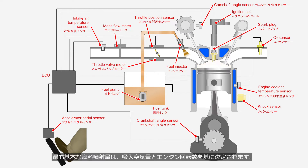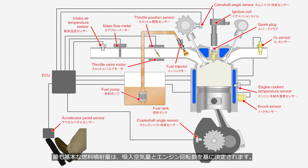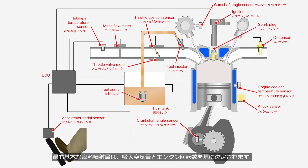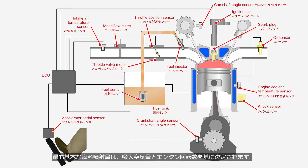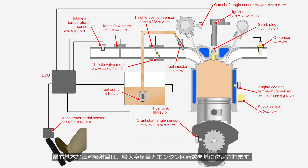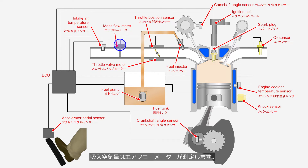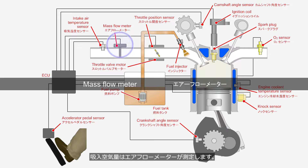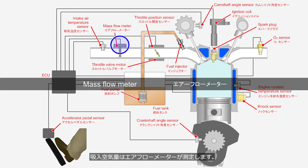The most basic fuel injection quantity is determined based on the intake air volume and engine rotation speed. The air intake volume is measured by the mass flow meter.